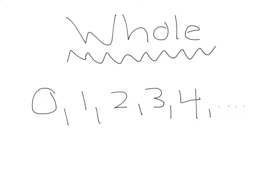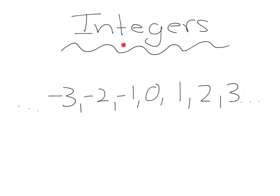Then those evolved into integers. And integers had the 0, 1, 2, 3, but they also had the negatives. Negative 1, 2, 3, and so on.